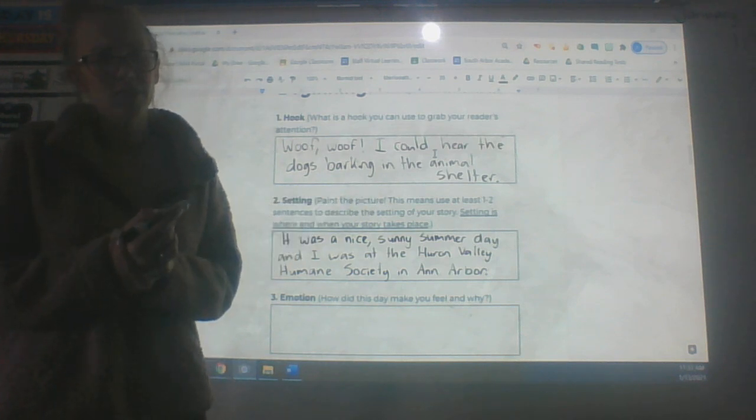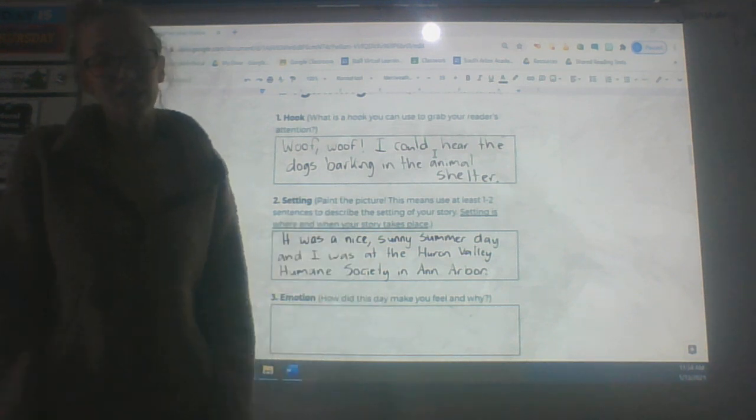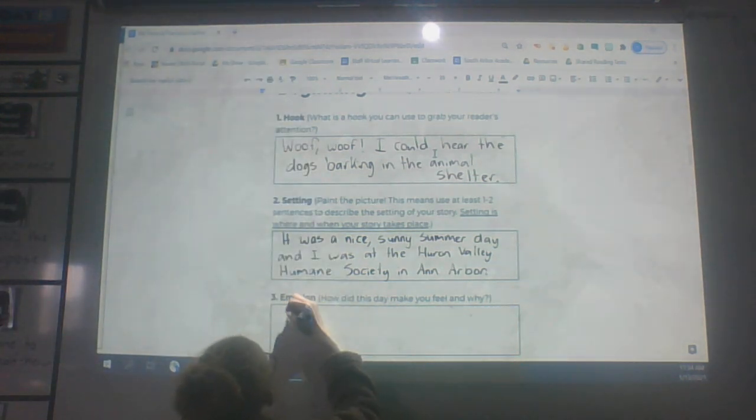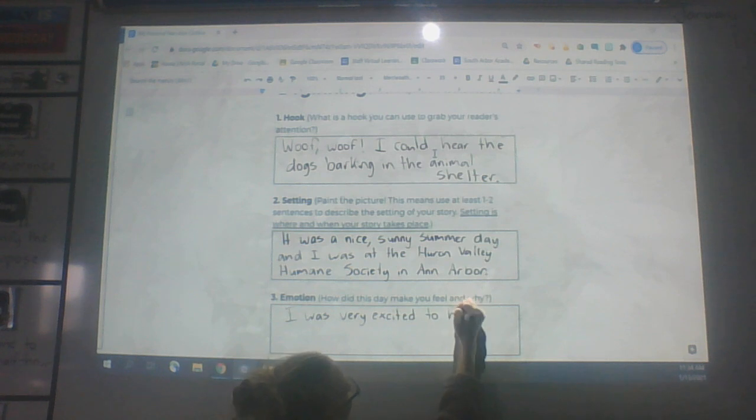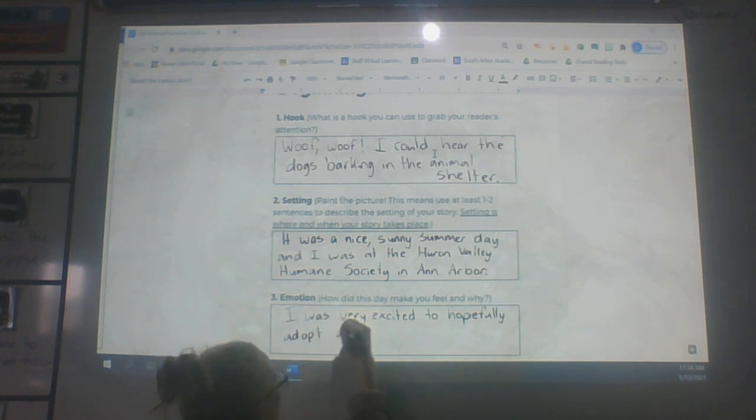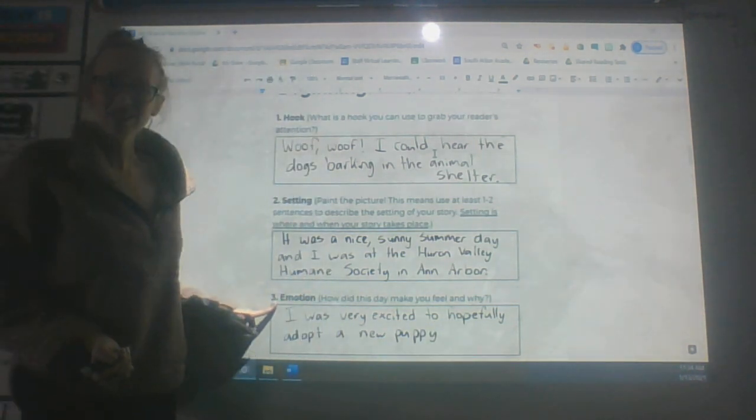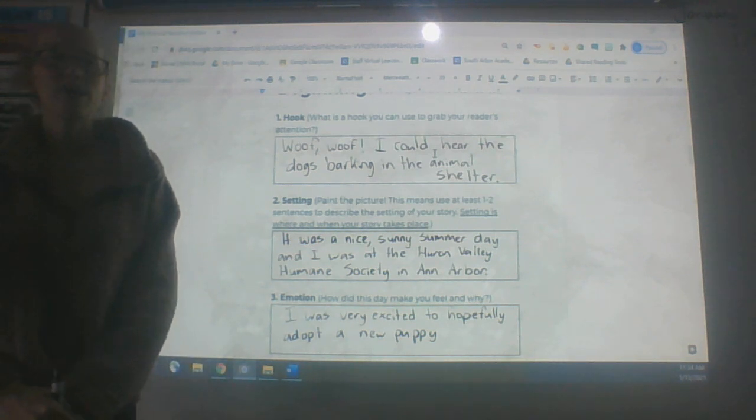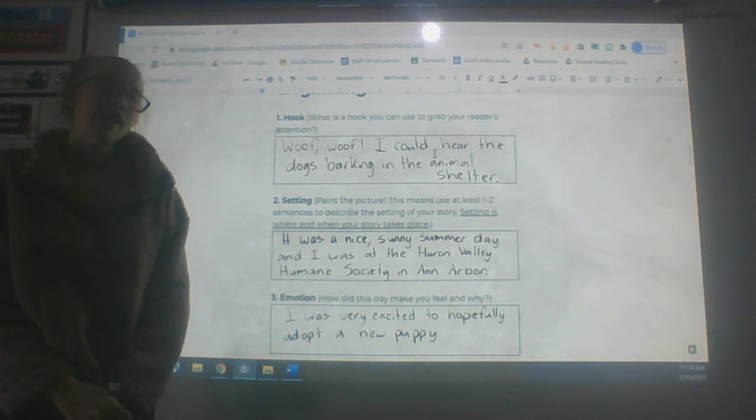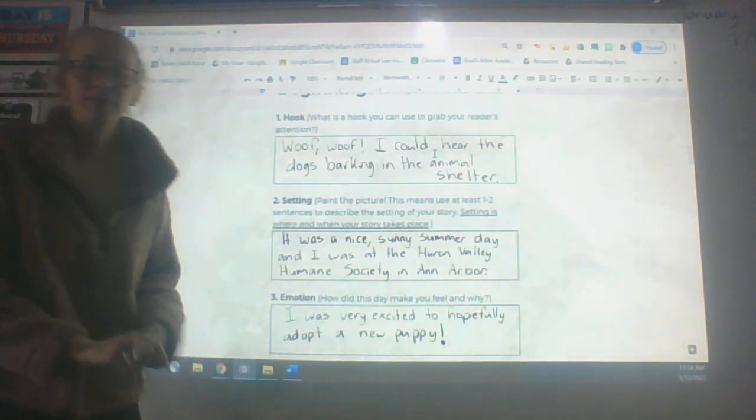Why was I excited? At a humane society, there are animals. So I was super excited to hopefully adopt a new puppy. This sentence shows a lot of emotion. Does anybody remember what punctuation mark I use if I'm showing a lot of emotion? If you're thinking exclamation point, you got it right. I'm going to put an exclamation point because I was so excited.